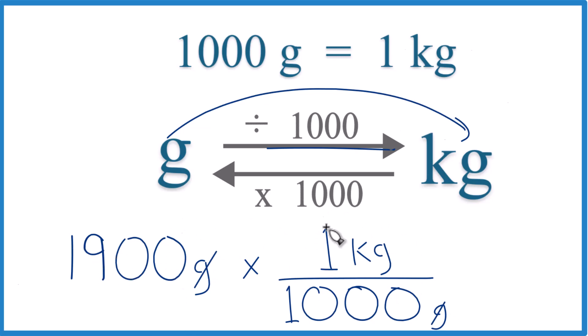So 1,900 times one kilogram, that's 1,900 kilograms. Divide by 1,000, you get 1.9 kilograms, just like we got before.